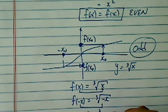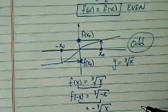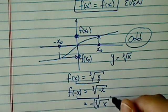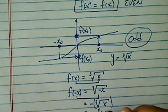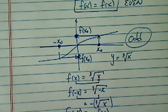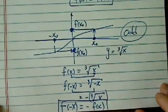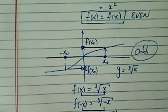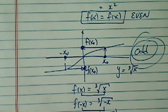And then, this one is equal to minus cube root of x, cube root is equal to f of x. So, therefore, f of minus x, here we proved, is equal to minus f of x. We call this function odd.